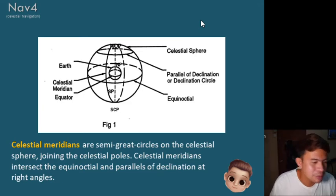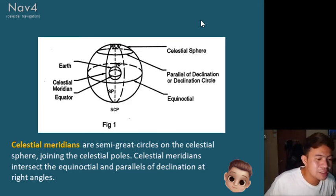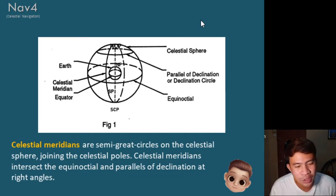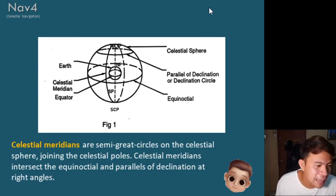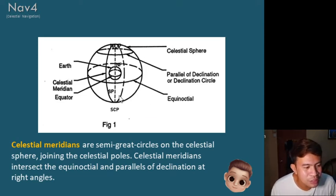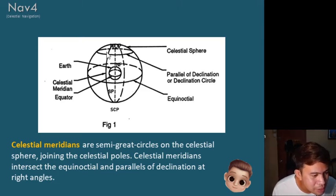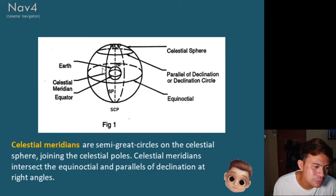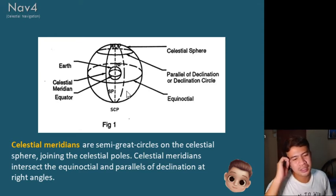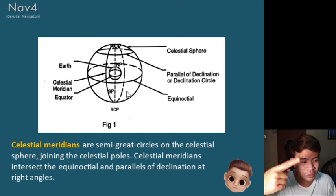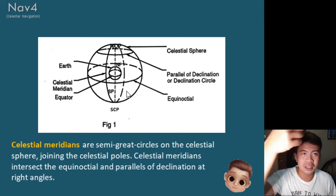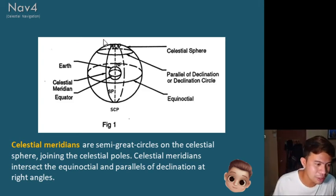Celestial meridians are semi-great circles on the celestial sphere joining the celestial poles. Celestial meridians intersect the equinoctial and parallels of declination at right angles. The equinoctial refers to the celestial equator. The celestial meridian is analogous to longitude in terrestrial navigation.